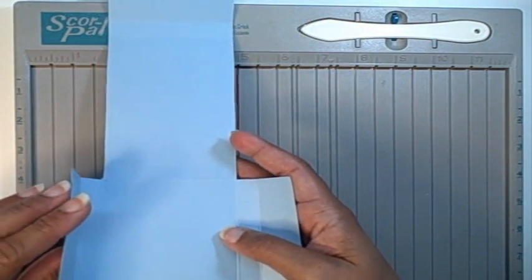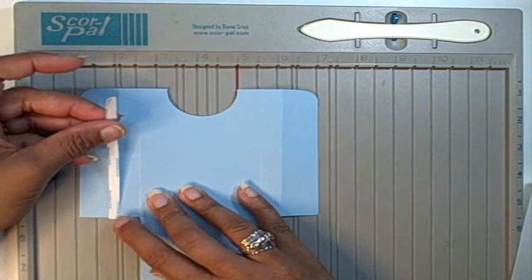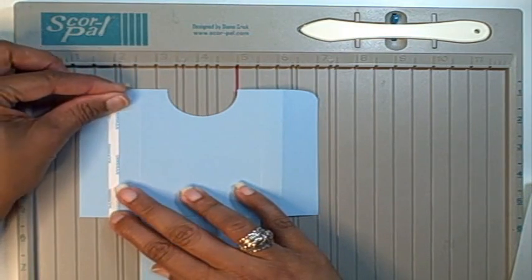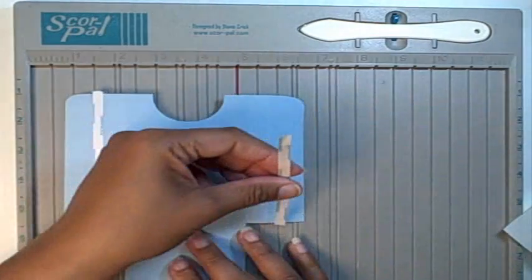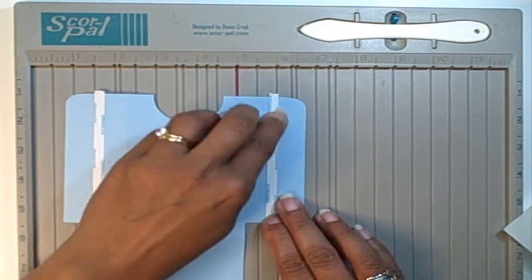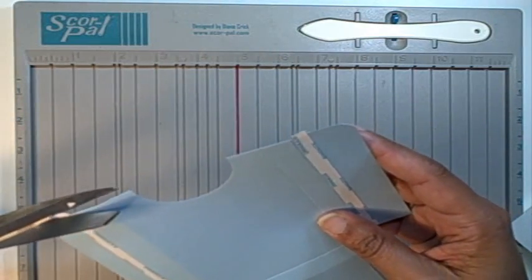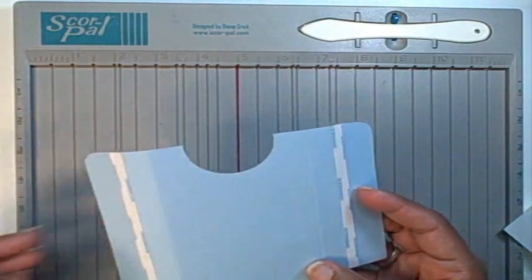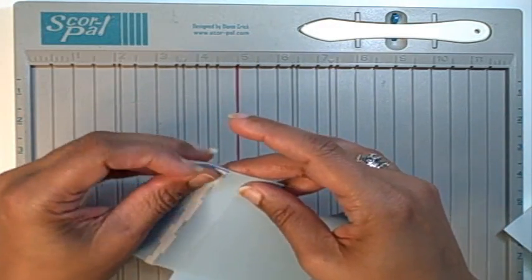So our next step is just tape. You only need two lines of tape. I will put a line of tape right here, and then I will put another line of tape right here. It is on the first score in from the edge. Just trim those very quickly, and then I'll peel those off.